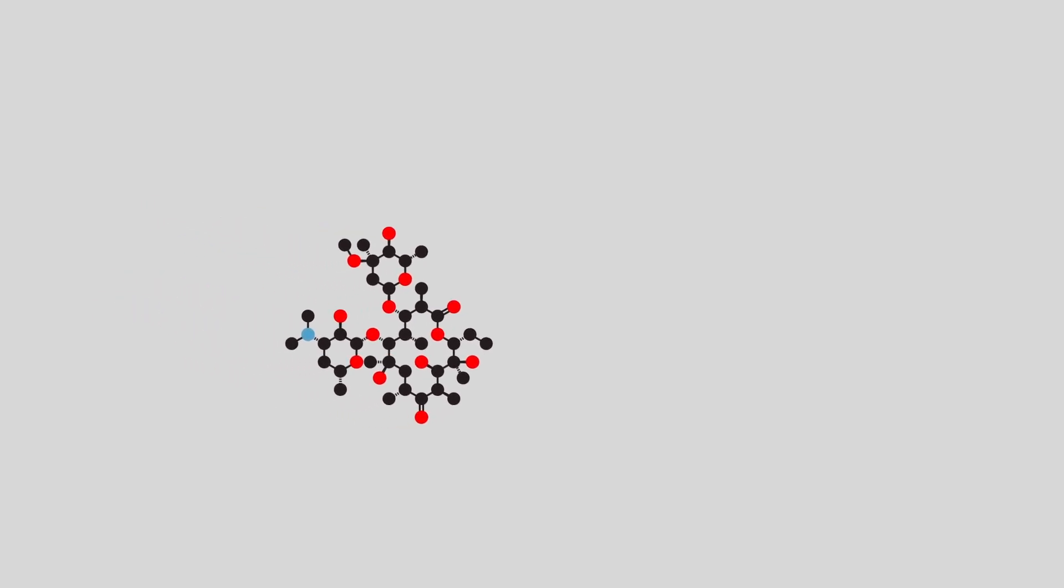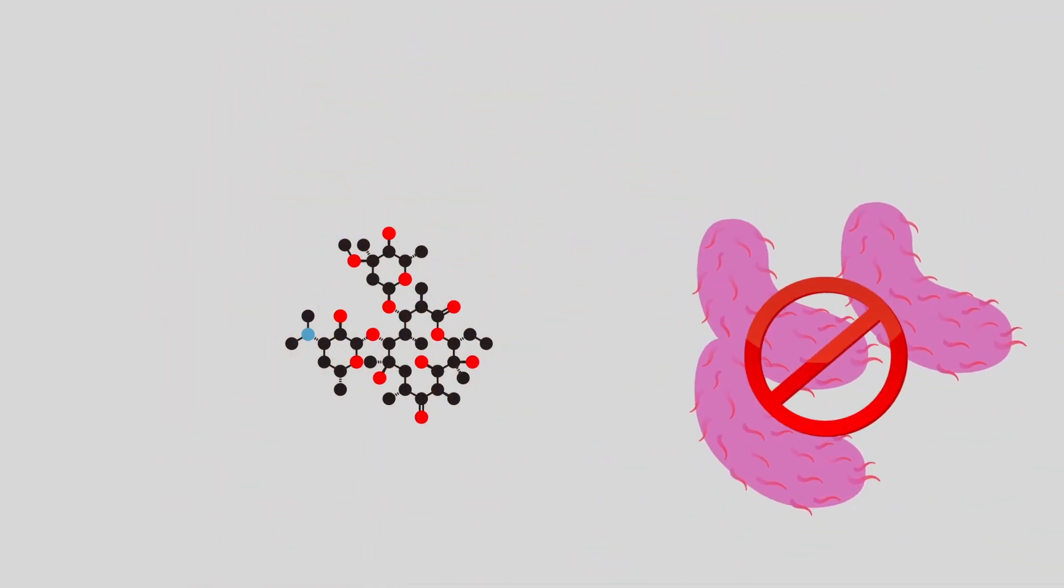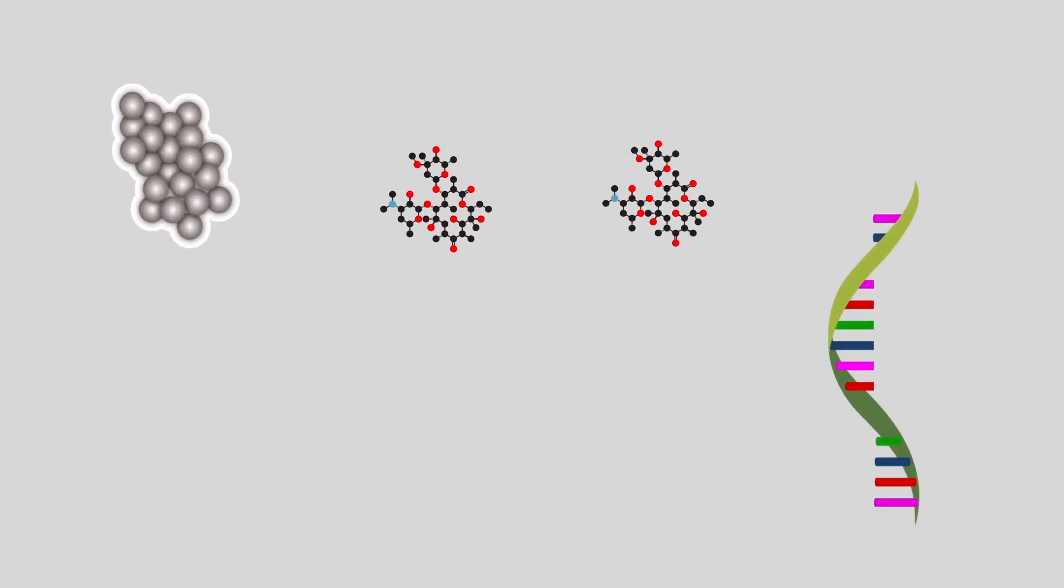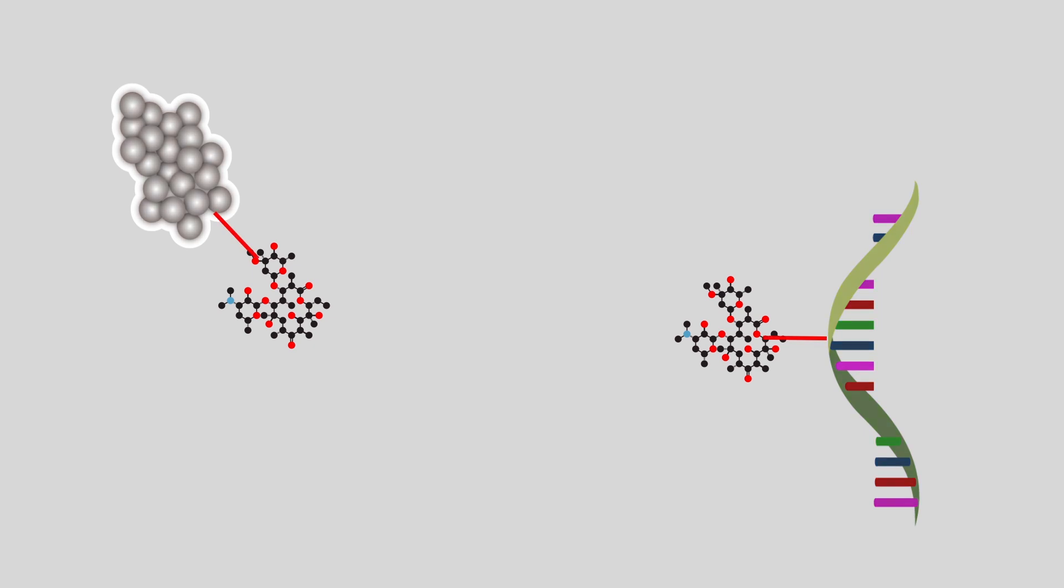Different antibiotics work in different ways to kill or stop the growth of bacteria. Antibiotics like erythromycin and neomycin work by stopping protein synthesis inside the bacterial cells. By binding to specific RNA and other internal structures, these antibiotics stop the process of protein synthesis, which is a basic need for all living organisms to survive.